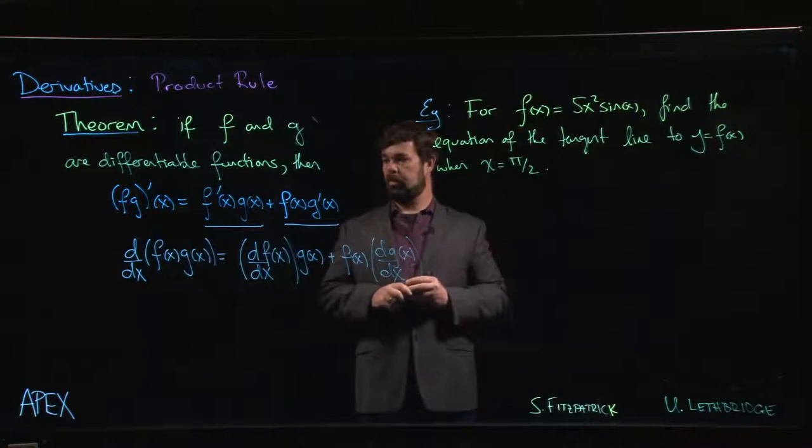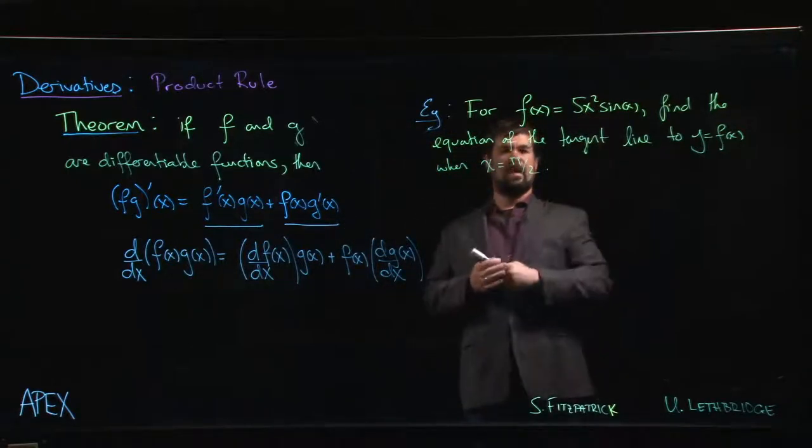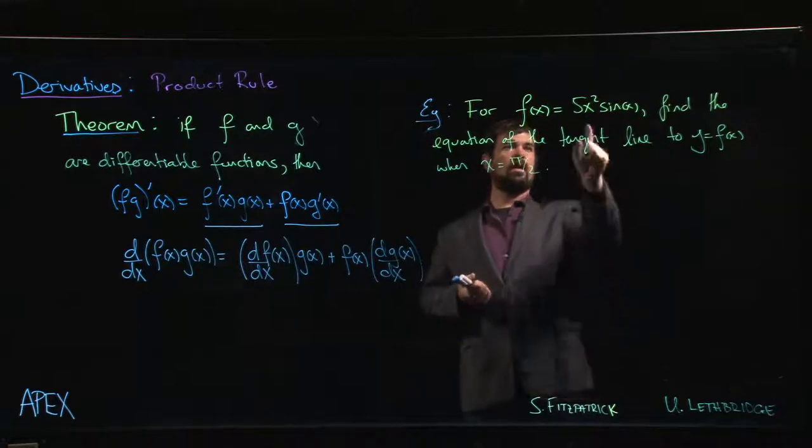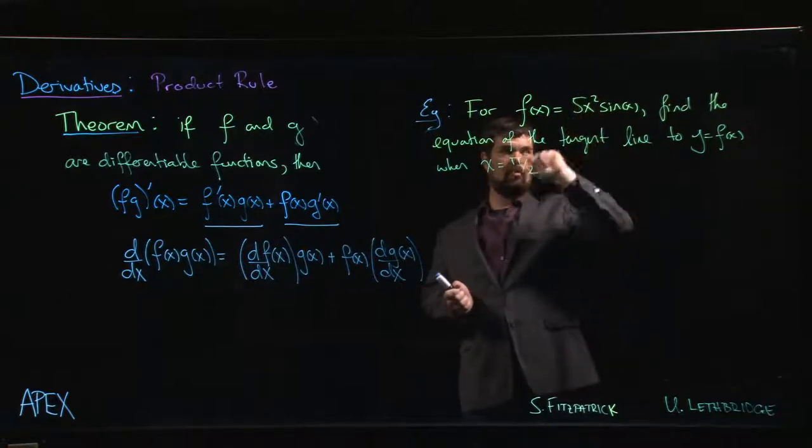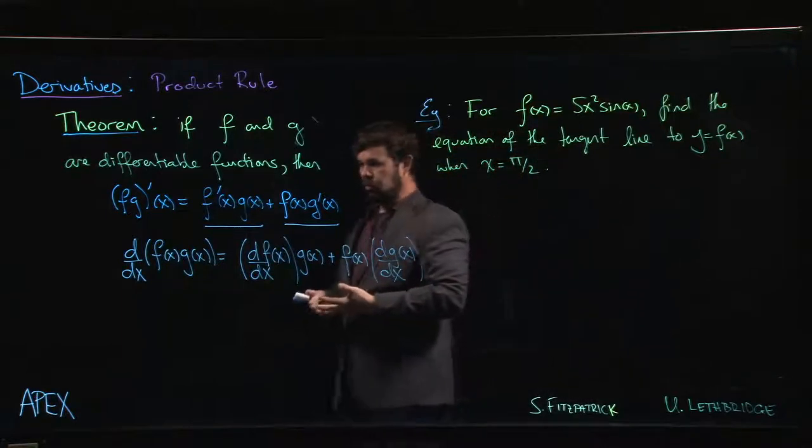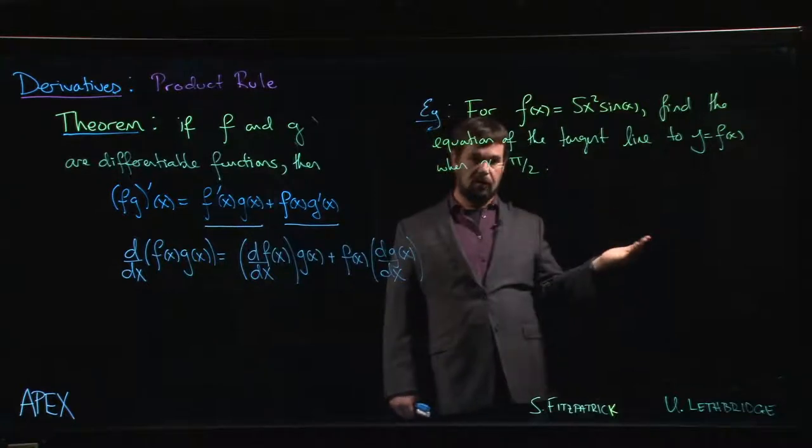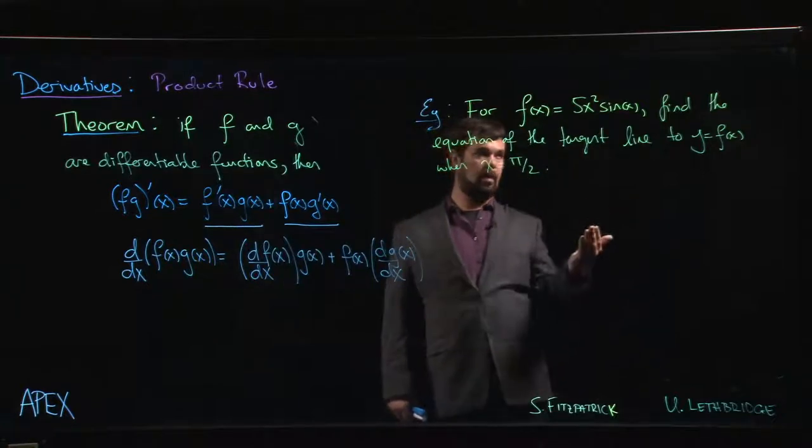So we're going to look at an example using the product rule. In this case, our function, we've got, if you want, you can think of it as a product of three items. We've got the 5 times the x squared times the sine x. But we already have a constant rule that says that if you've got a constant multiple, that's just going to multiply the entire derivative. So we can bring that out front. We don't have to worry about it.